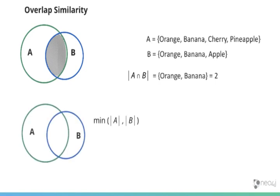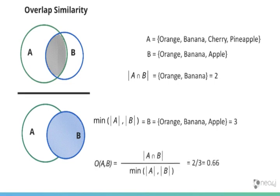Now the overlap similarity algorithm uses the smaller of the two sets. Which one's smaller between A and B? We can clearly see that B is smaller—it has three items in it. Then it divides that intersection by the smaller of those two sets. In this case, two divided by three, which gives us a 0.66 coefficient.